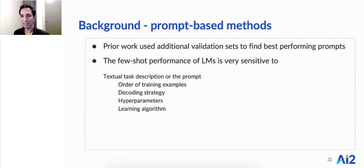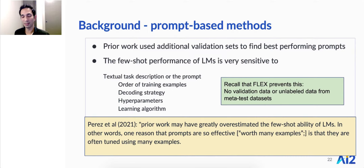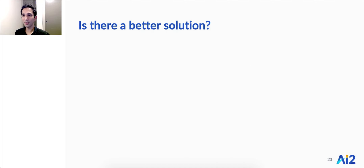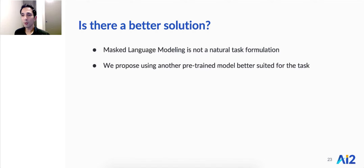Prior work also shows these models often use additional validation sets for model and prompt selection, and are sensitive to order of training examples, decoding strategies, hyperparameters, and learning algorithms. A recent paper by Perez et al. states that prior work may have overestimated the few-shot ability of language models because they're often tuned using many examples. FLEX principles prevent this — we shouldn't use additional validation sets other than the few-shot examples provided in the evaluation setting. The problem is that masked language modeling is not a natural task formulation, making it tricky to adapt downstream tasks to a language modeling format.